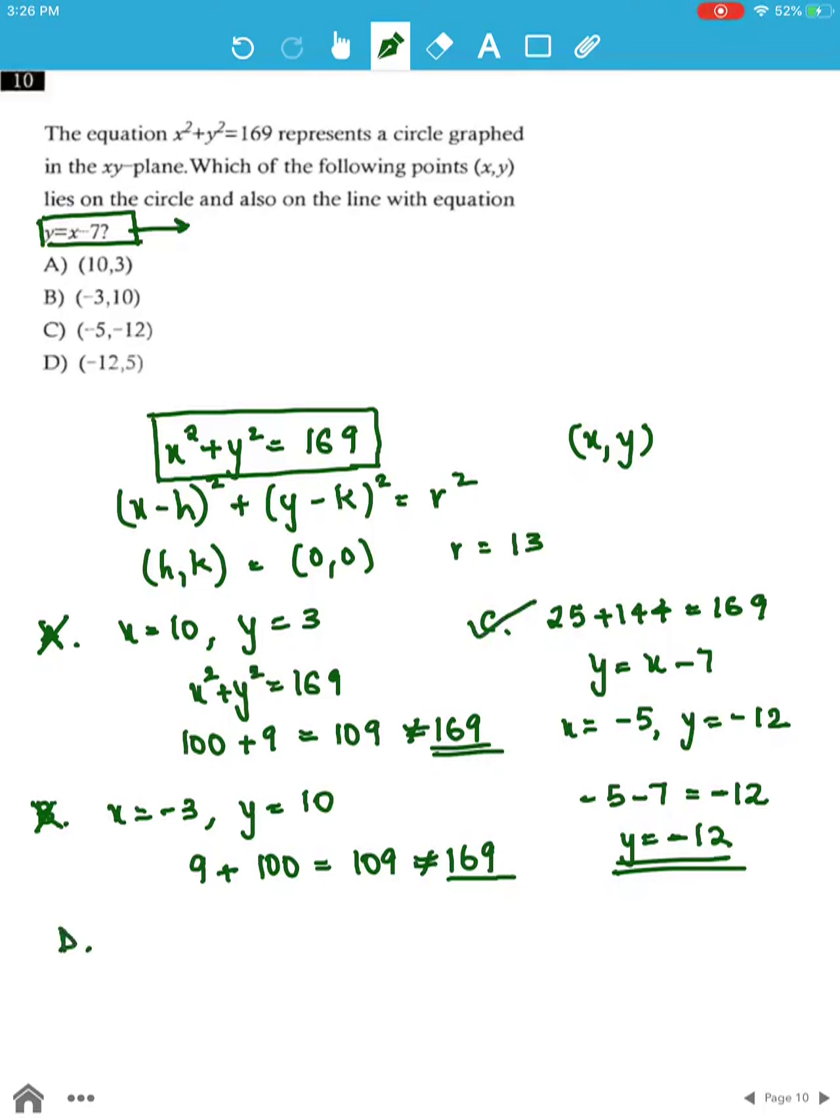To check option D, when x is -12, y is 5. This satisfies the circle equation: 144 plus 25 equals 169.